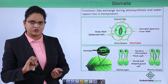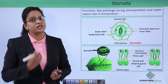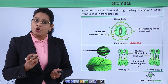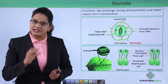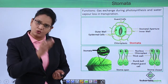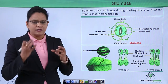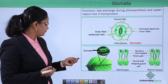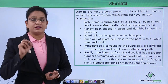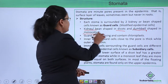The guard cells are surrounded by accessory epidermal cells called subsidiary cells. Guard cells are living cells that contain chloroplasts, so they can also photosynthesize. The function of guard cells is to help in gas exchange — carbon dioxide enters the plant through the stomata for photosynthesis, and excess water is evaporated during transpiration through the stomatal pores. The inner wall of the guard cell (closer to the pore) is thick, while the outer wall is comparatively thin, to maintain turgidity during water absorption.